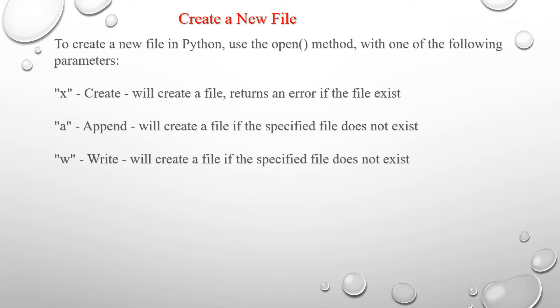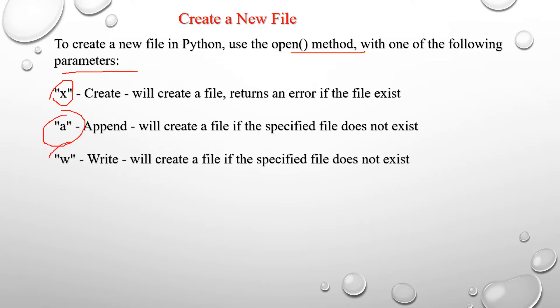Now we will see how to create a new file in Python. Use the open method with one of the following parameters: 'x', 'a', or 'w'. If you use 'x', it will create a file and return an error if the file already exists. If you use 'a', it will create a file if the specified file does not exist. If you use 'w', it will also create a new empty file if the specified file does not exist.